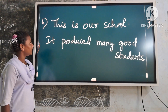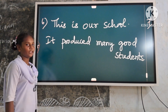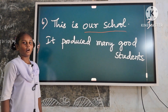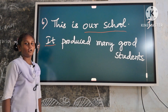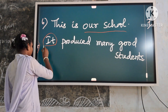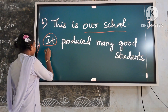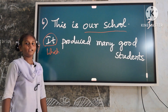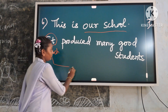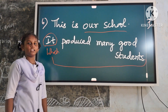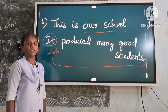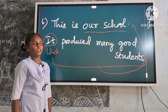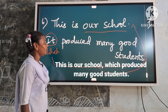Example 6: This is our school. It produced many good students. Here the noun phrase is 'our school.' Related pronoun: it. Round off the related pronoun in the second sentence. Replace it with which. Keep the entire second sentence beside the first identified noun phrase of things. Now the answer is ready: This is our school which produced many good students.